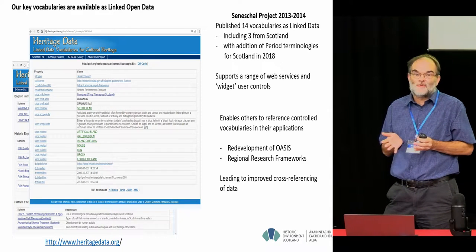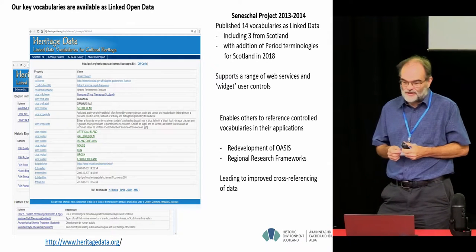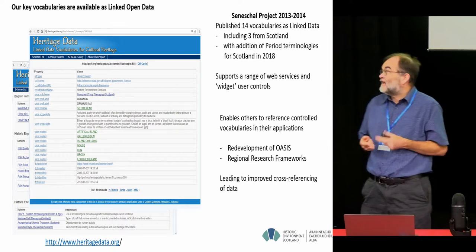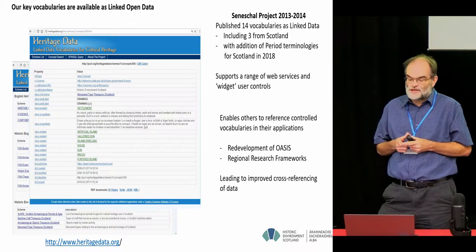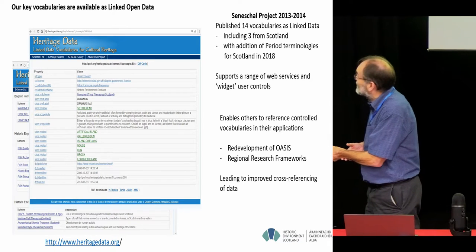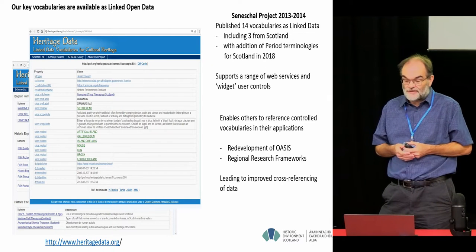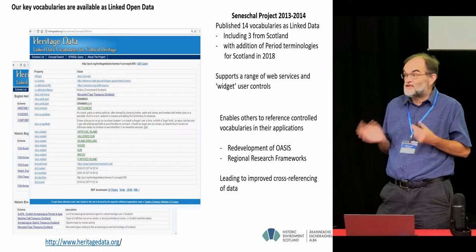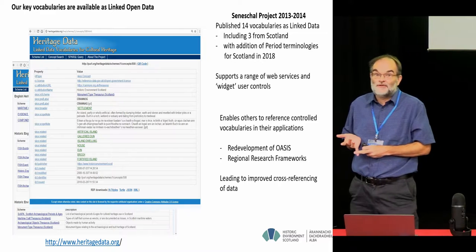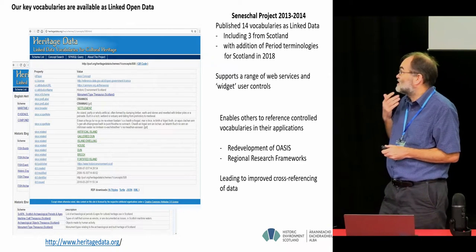The terminologies we use to index information: we worked with Historic England in 2013–2014 and with the University of South Wales on the Seneschal project, where we published 14 vocabularies from England, Scotland and Wales as linked data. This year we've just added our period terminologies for Scotland in draft format, available as five-star linked data in a variety of formats — JSON, Turtle, and RDF triples. People are using that in their own systems; there are widgets to allow people to access it. The redevelopment of OASIS is using these linked data vocabularies for vocabulary control, and the same vocabularies will underpin cross-searching of regional research frameworks, encouraging and increasing interoperability of systems.